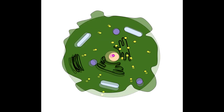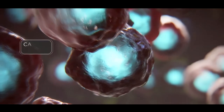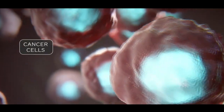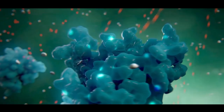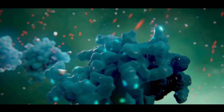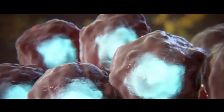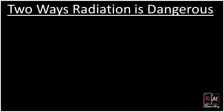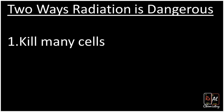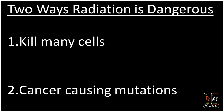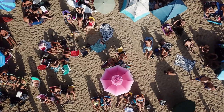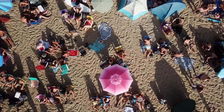When a cell undergoes apoptosis, no further damage is done — you lose a cell, but that's it. On the other hand, in some cases a damaged cell can begin to reproduce really rapidly, and that's what we call cancer. So there are two ways that radiation can be dangerous: it can kill tons of cells, or it can cause cancer. Both are actually demonstrated pretty well by sunbathing — sunbathing is basically taking a radiation bath.